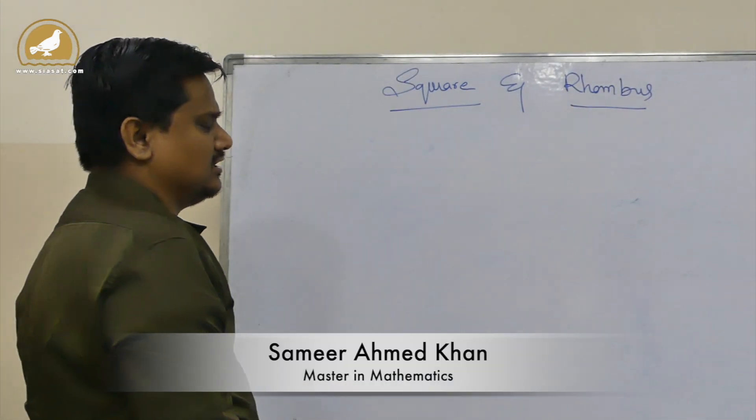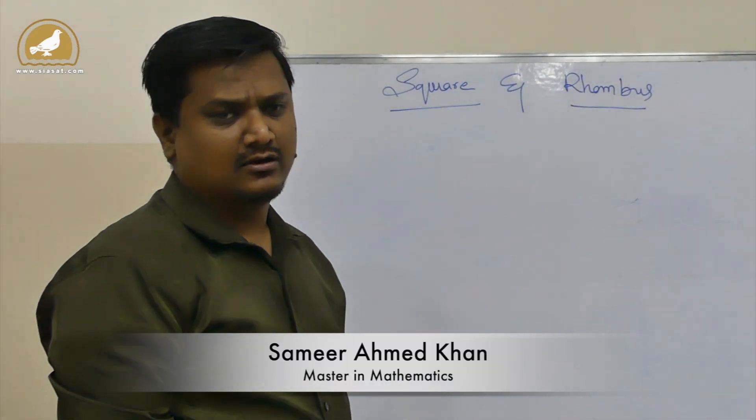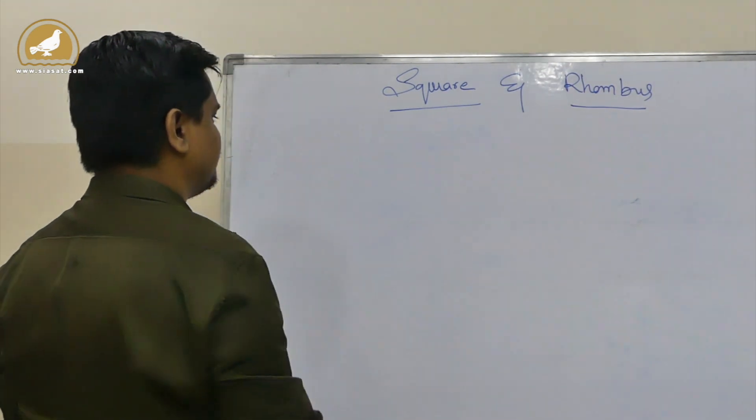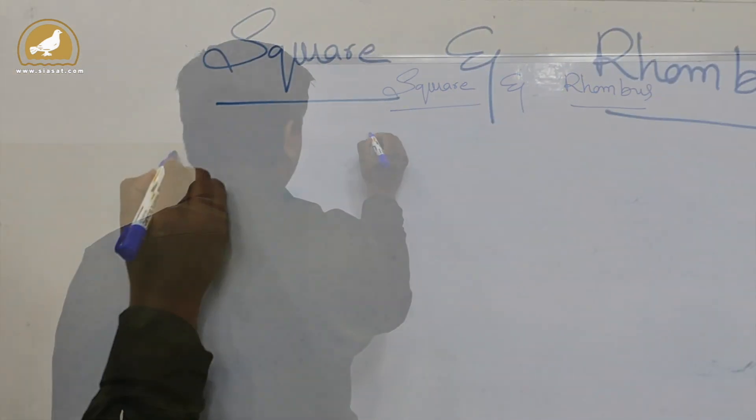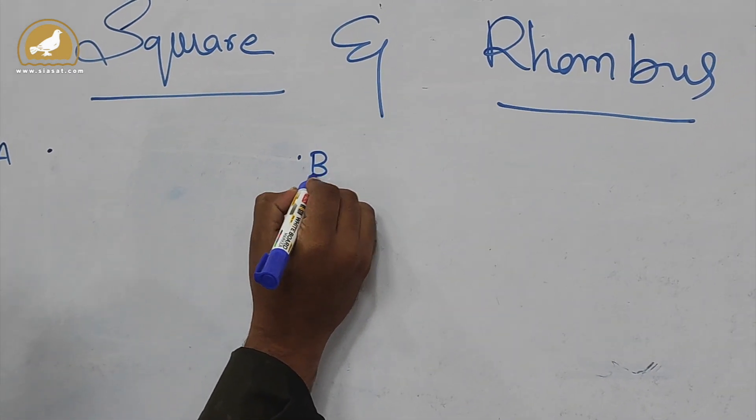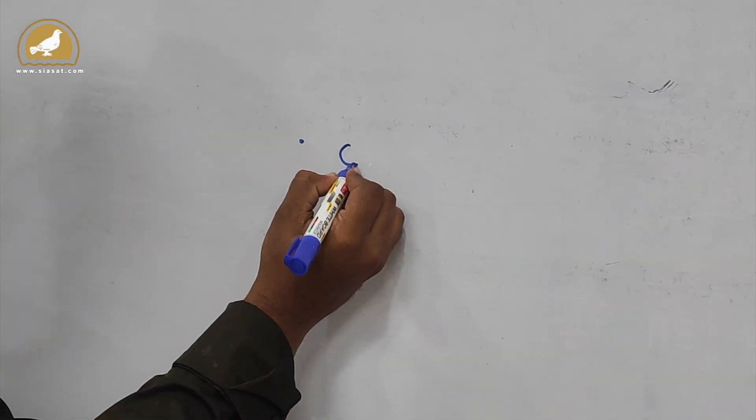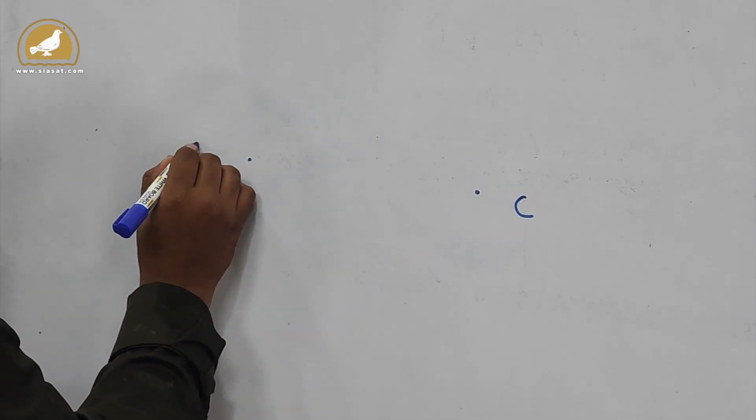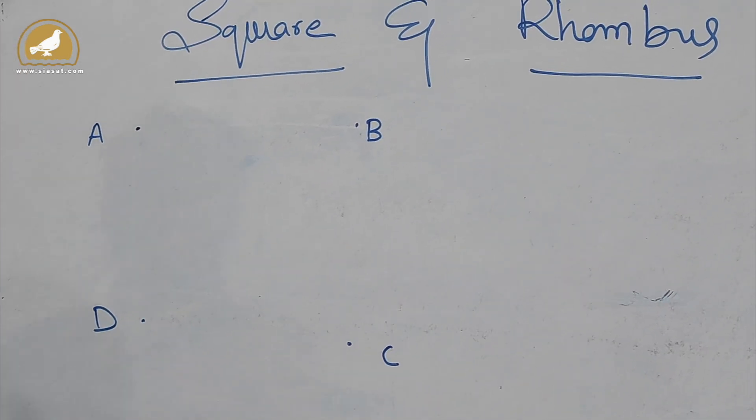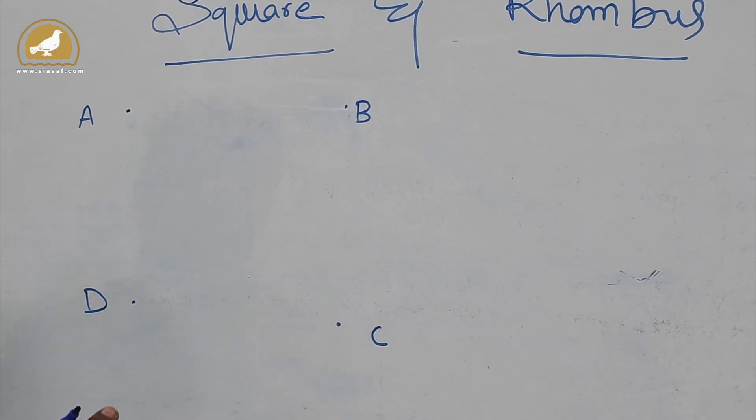So far we saw structures with three points. Now we'll see four-point structures. For example, if I have four points A, B, C, and D, remember you have to take points in a clockwise or anticlockwise direction, but it should be in cyclic order.